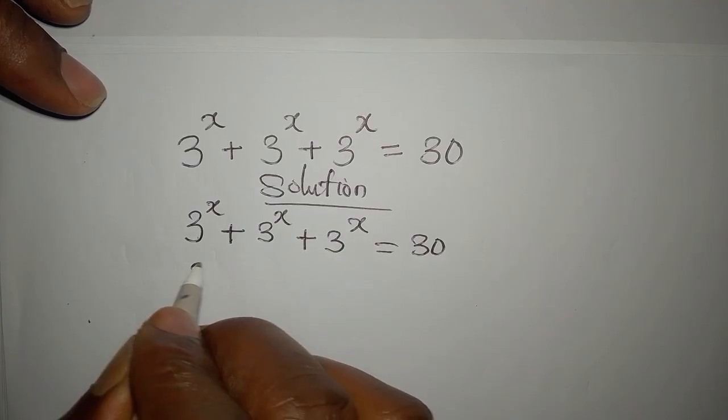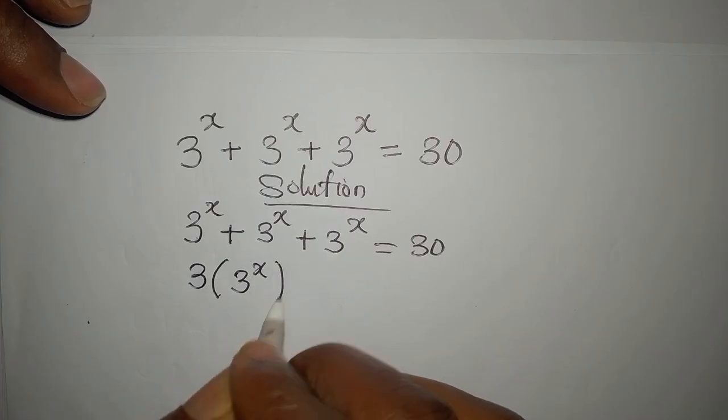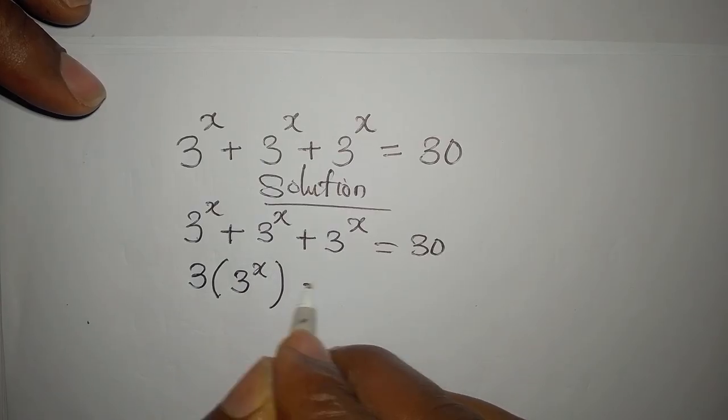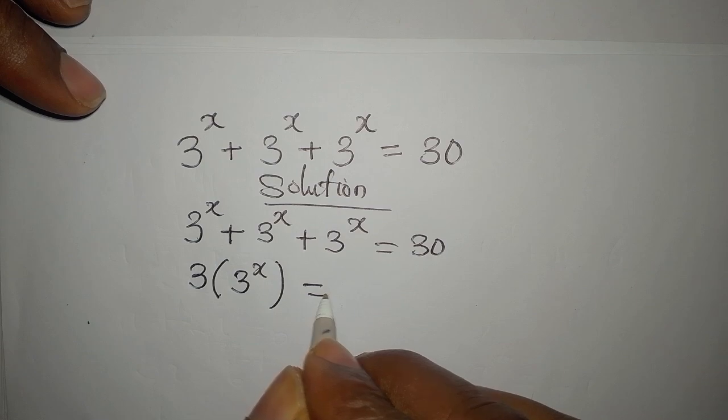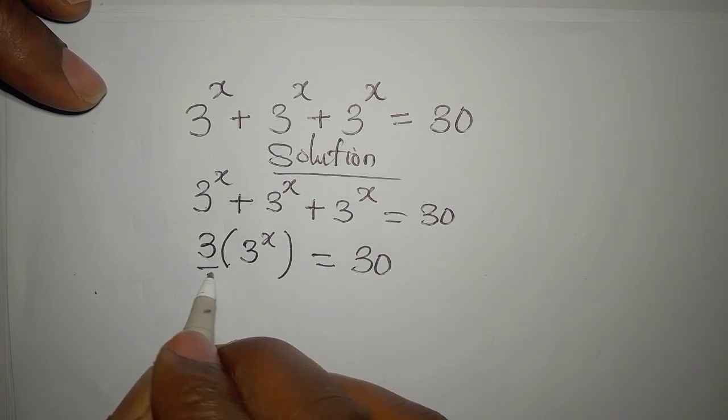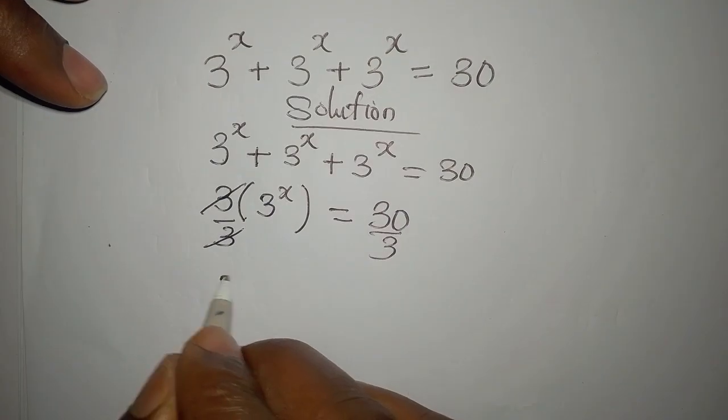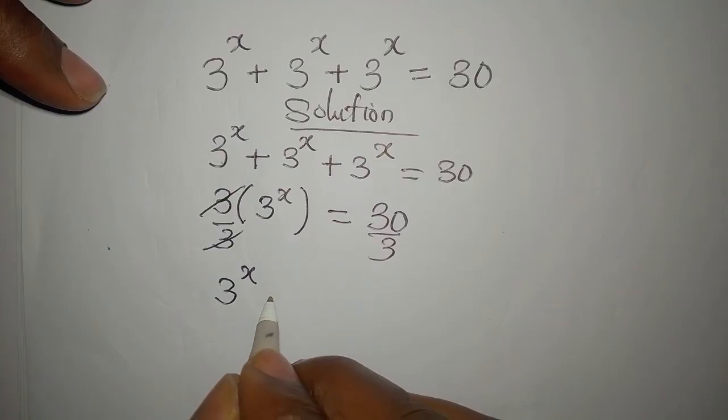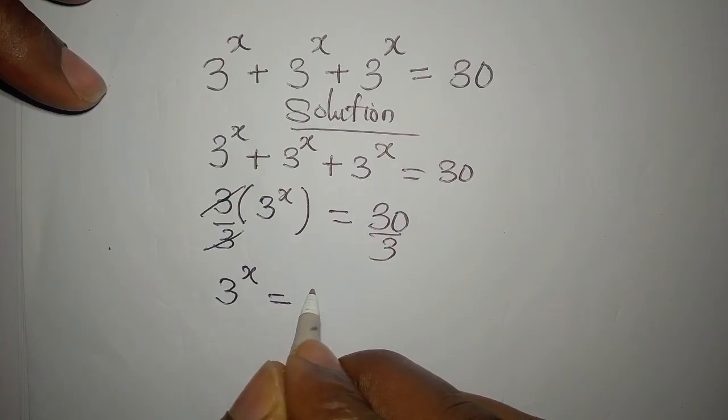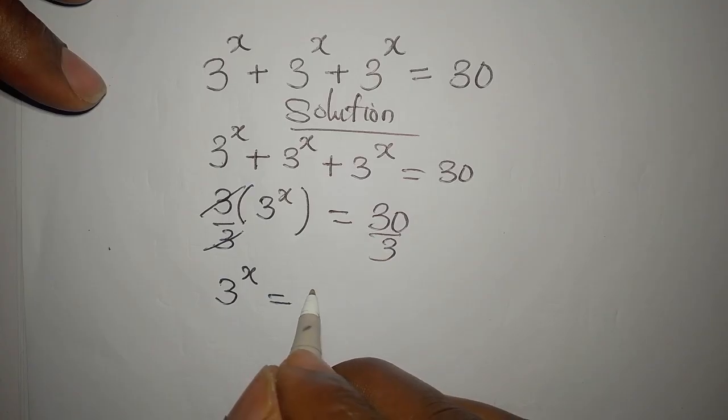3 to the power of x plus 3 to the power of x plus 3 to the power of x will give us 3 times 3 to the power of x, and this will be equal to 30. Then we can divide both sides by 3 so that 3 to the power of x will remain here and it will be equal to 30 divided by 3, that is 10.